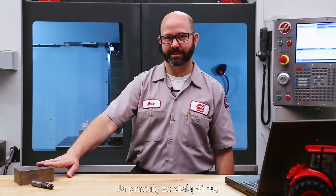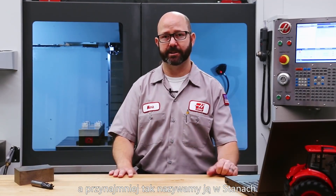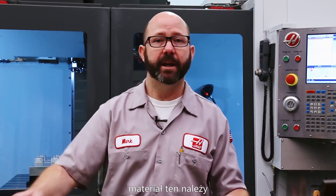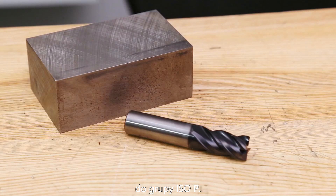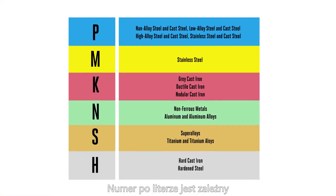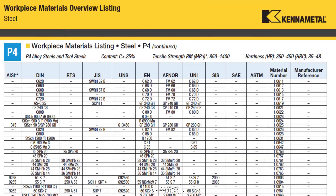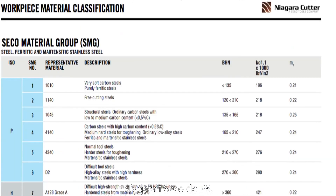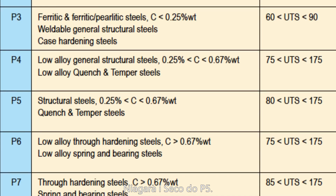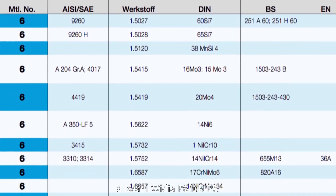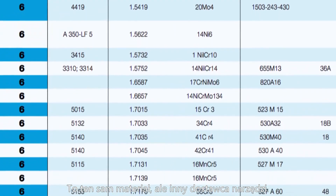I am working with a 4140 steel — that's what we call it in the United States. In Europe using EN names, this might be called 42CrMo4; in Japan, something different. But no matter where you are in the world, this material falls into the P ISO material class. The number following the ISO letter changes between manufacturers: Kennametal calls it P-4, Niagara and Seco may call it P-5, Sandvik classifies it as P-2.1, while Iskar and Widia might call it P-6 or P-7. Same material, different tool vendor.